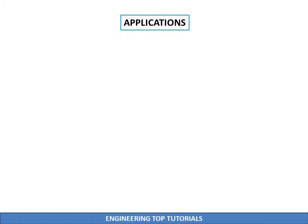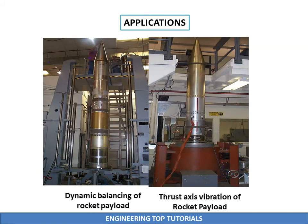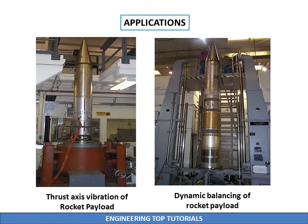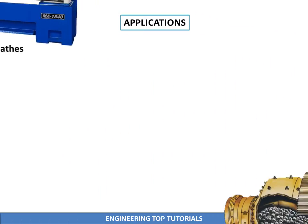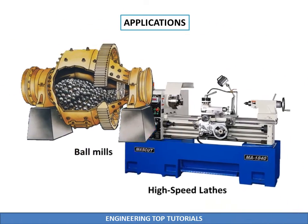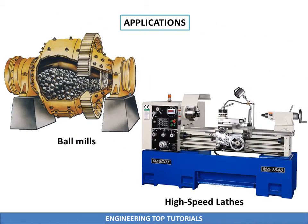Applications of hydrostatic bearings: they are used to damp thrust axis vibration of rocket payload and are also used for dynamic balancing. They are highly used in ball mills and high speed lathes.